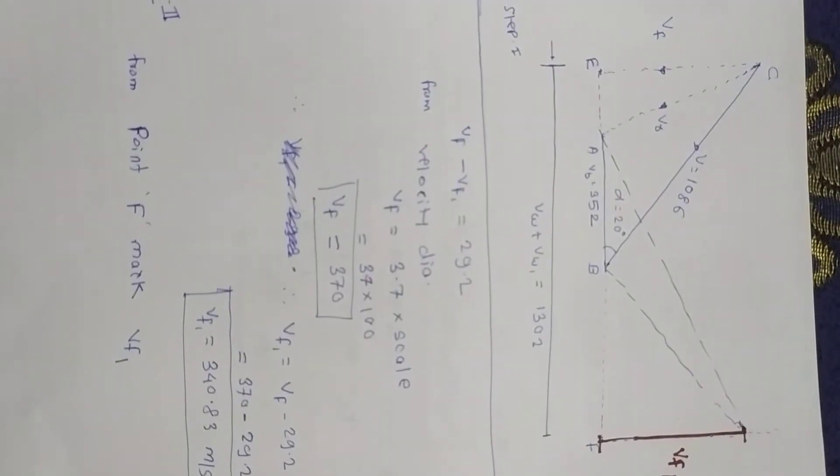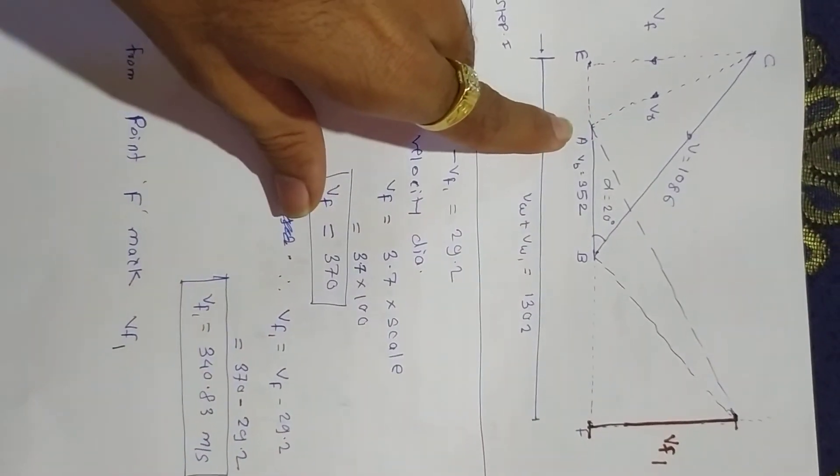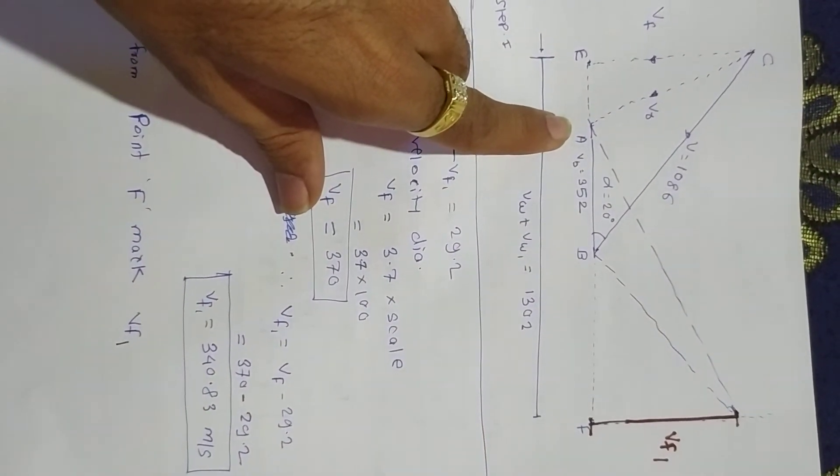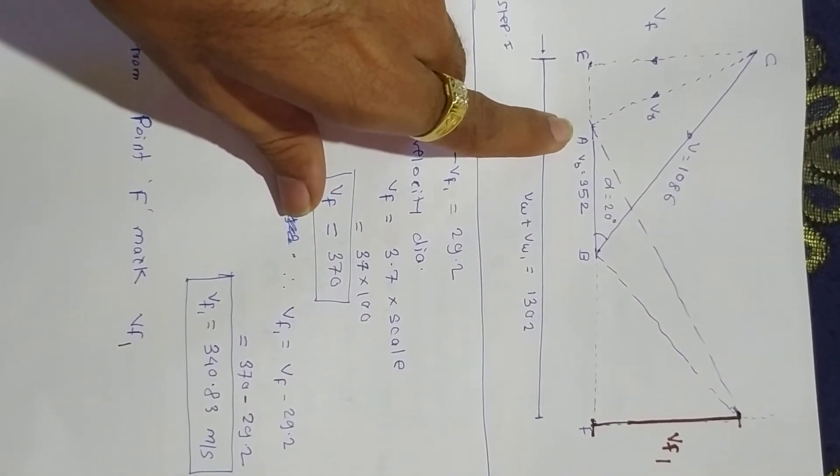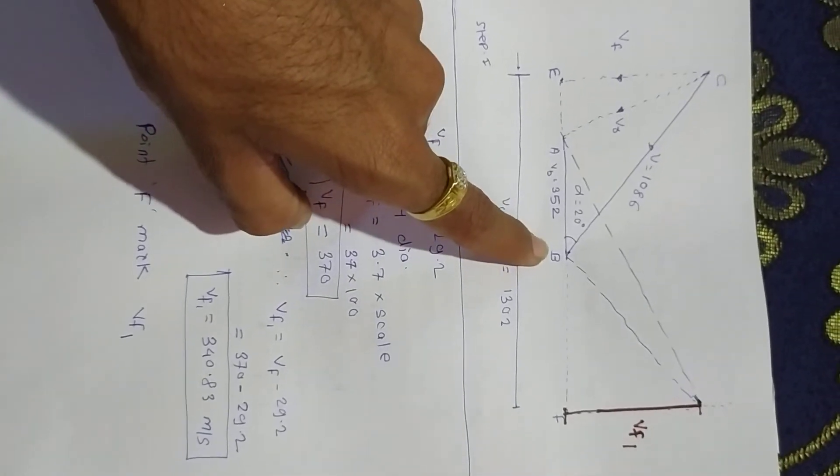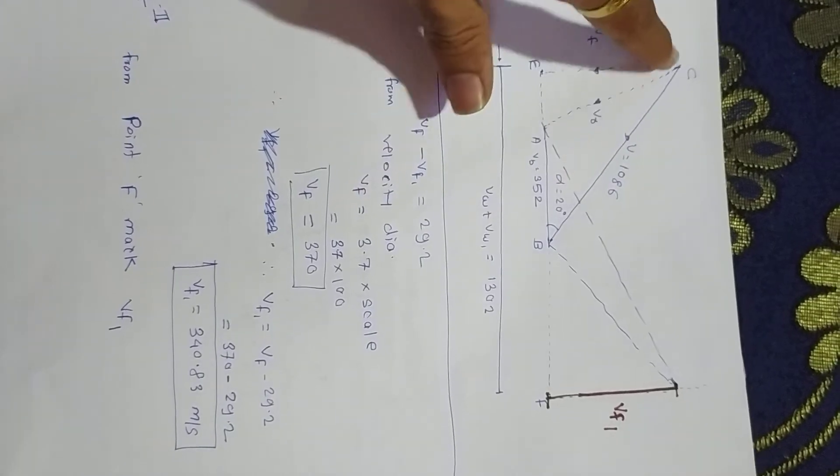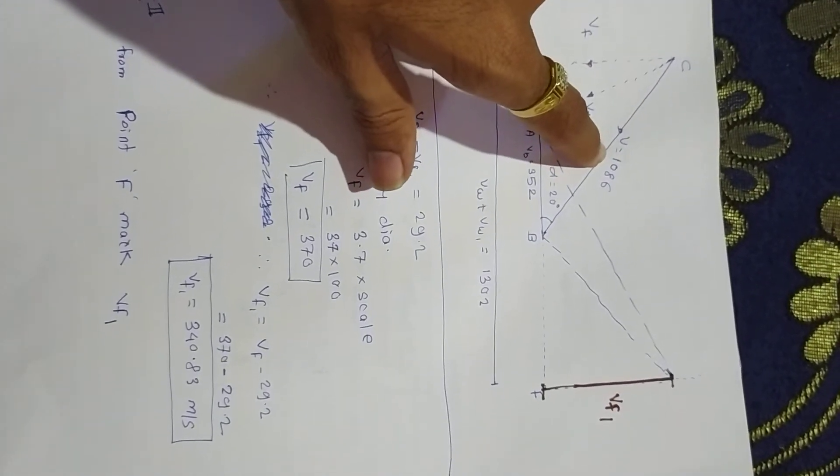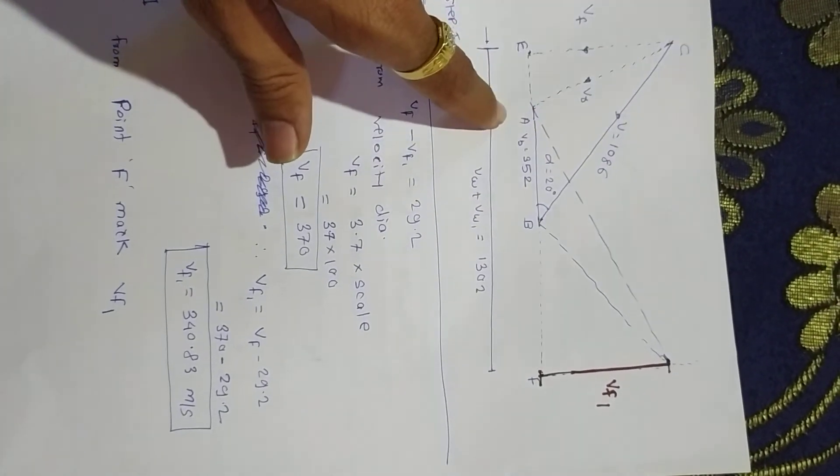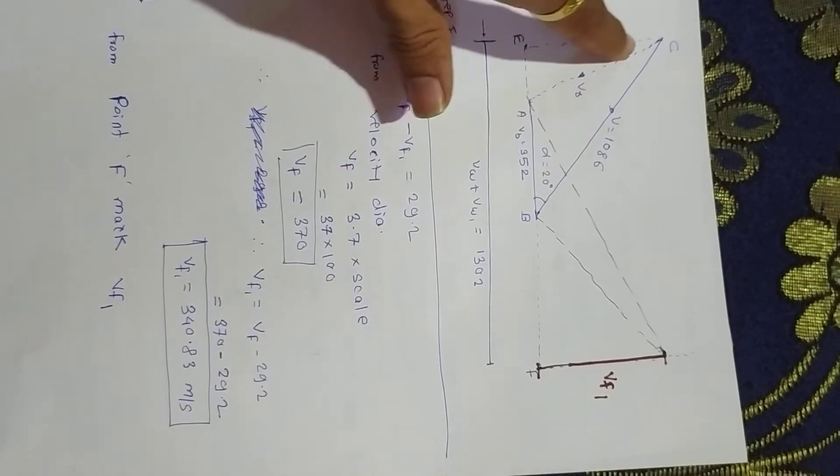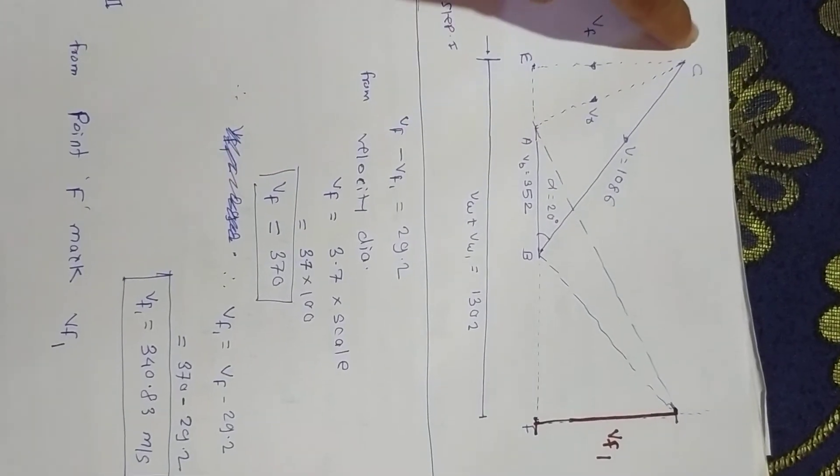Now we move to the diagram. VB is given. Take a scale—I've taken 1 cm equals 100 meters per second. Draw AB first as VB with proper scale. Make an angle alpha of 20 degrees, and on that line we plot V. We get point C. Join A to C and draw a perpendicular line, that is CE.